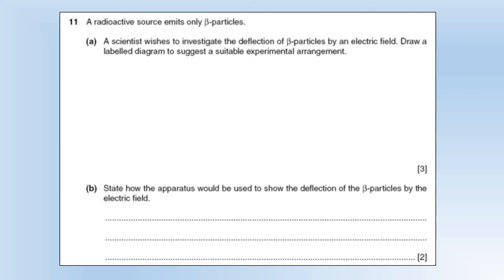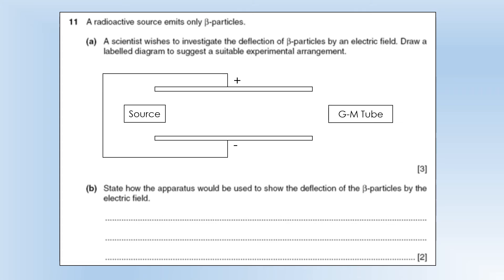So a radioactive source emits only beta particles. A scientist wishes to investigate deflection of beta particles by an electric field. Draw a diagram to suggest a suitable arrangement. So here's our setup.